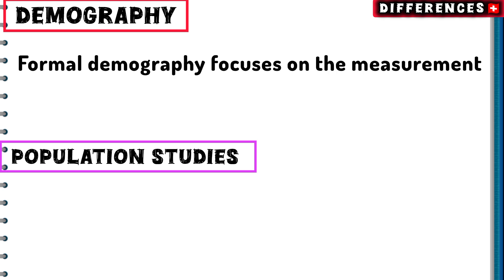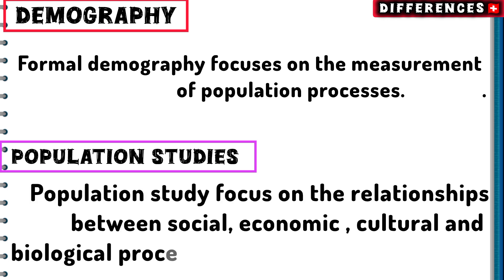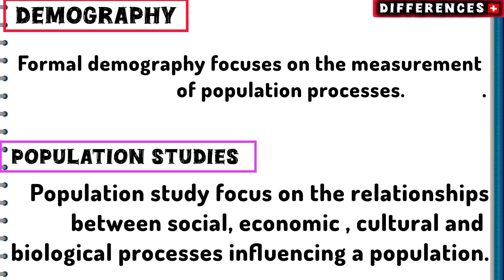Formal demography focuses on the measurement of population processes, while population study focuses on the relationships between social, economic, cultural, and biological processes influencing a population.